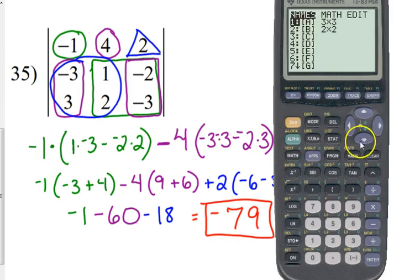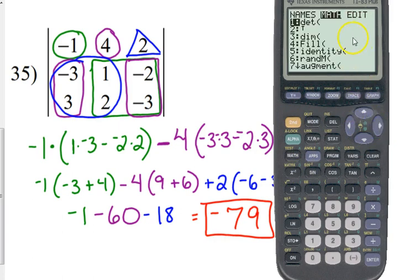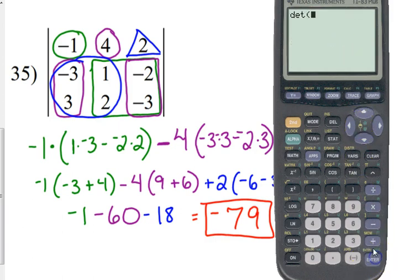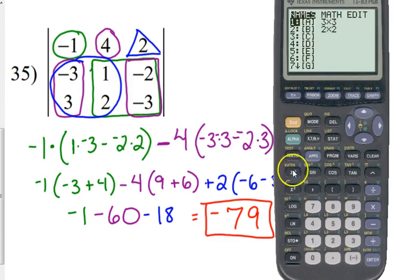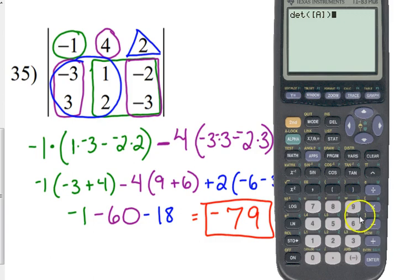Go back to my matrix menu. We haven't touched that middle column yet that says math. So, if we go over to math, you'll notice the first option there says DET. That stands for the determinant. So, you're going to press enter. And then, you're going to go back to your matrix menu. Stay in the name column. And put matrix A there. Close your parentheses. Press enter. And it tells you that the determinant is negative 79.